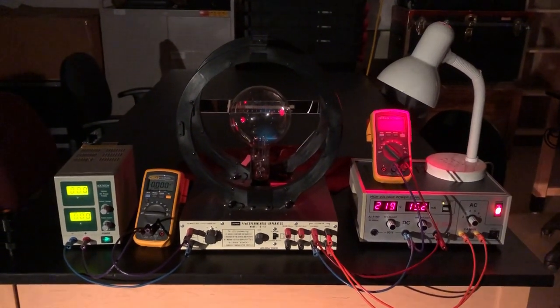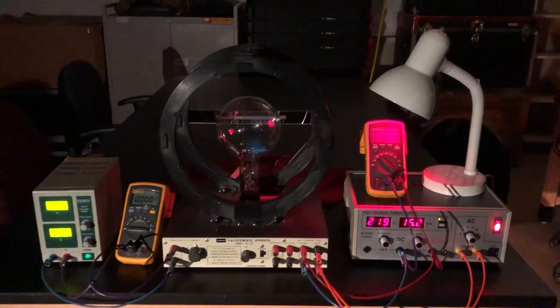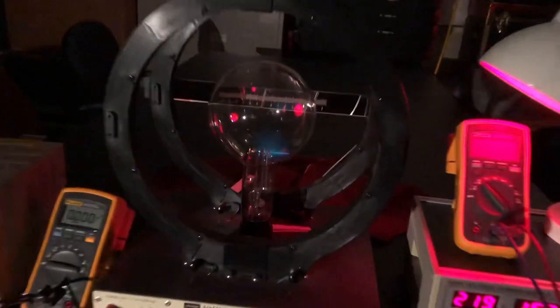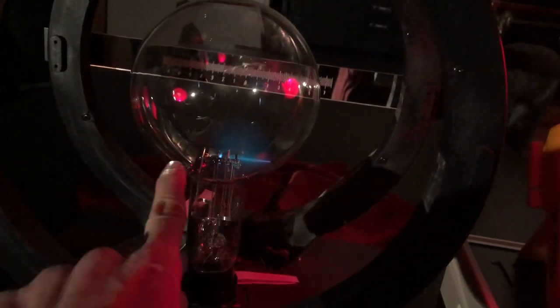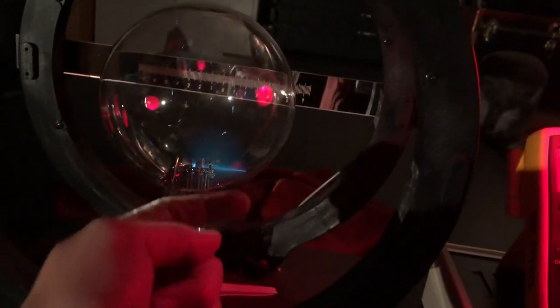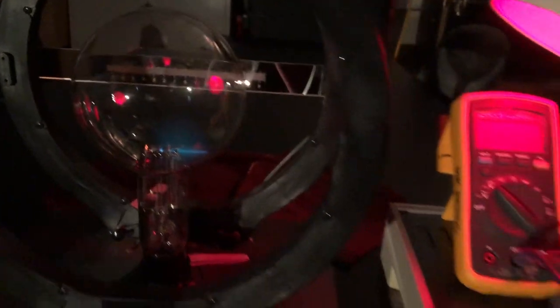All right, so here we have the full experimental setup. We have the Helmholtz coils surrounding the cathode ray tube, which you can see the electrons are being shot out of the gun towards the right, and they're illuminating the gas inside there.